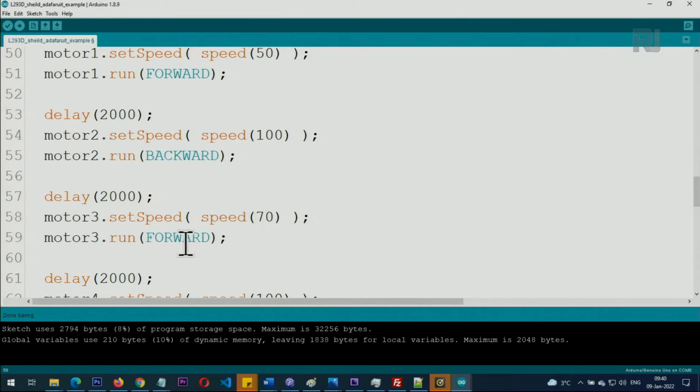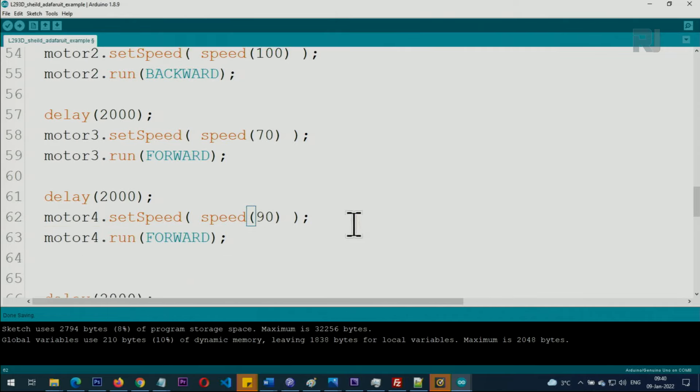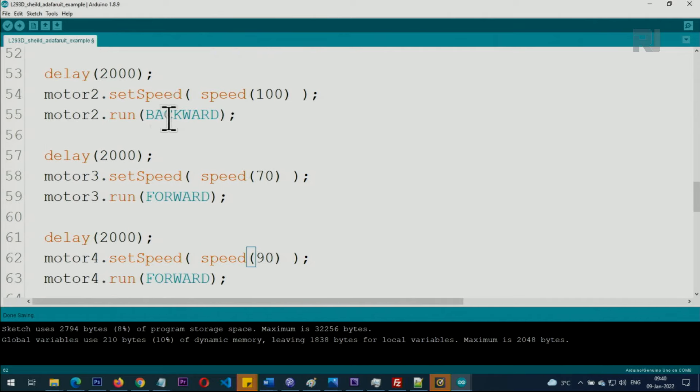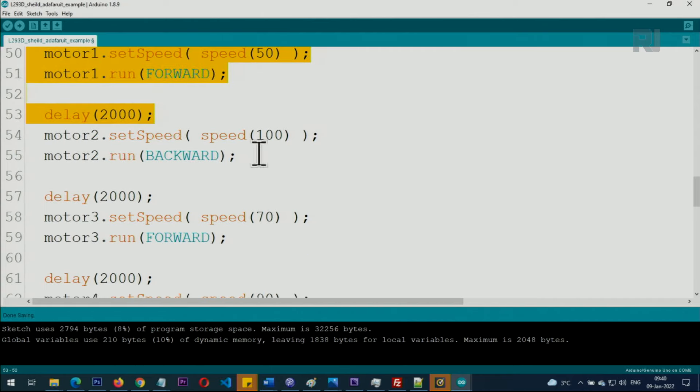And the same way motor three. So let's say I want to set it to 70, forward. And then motor four, 90 percent speed.